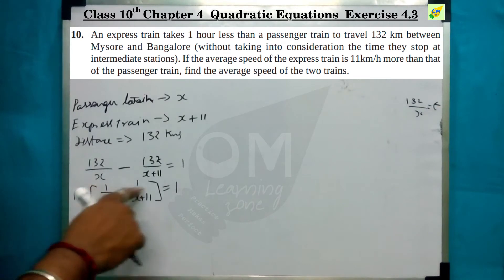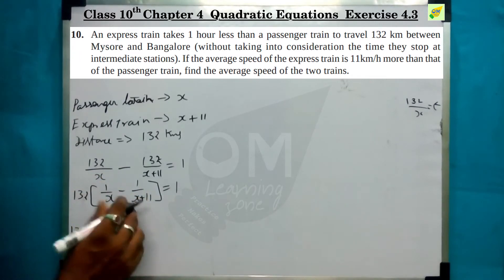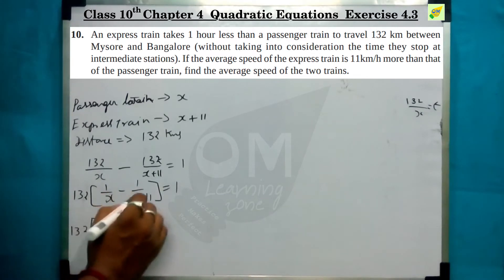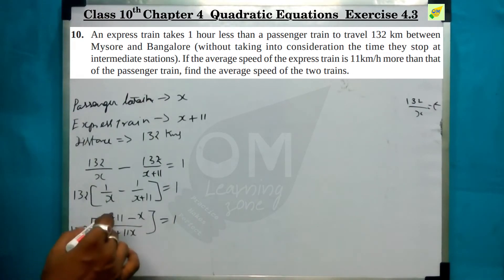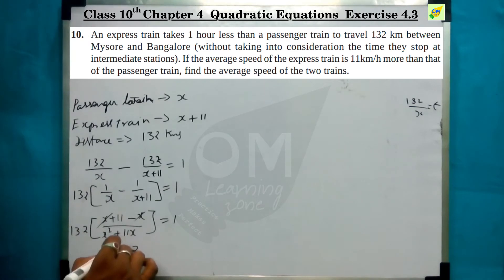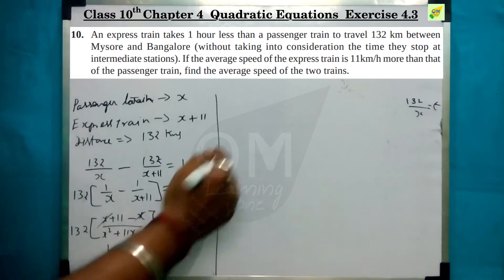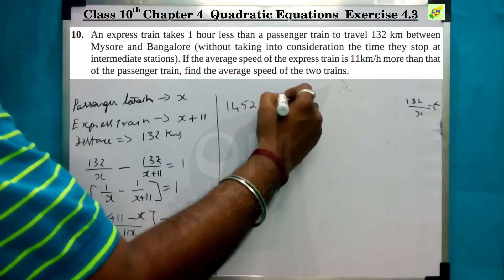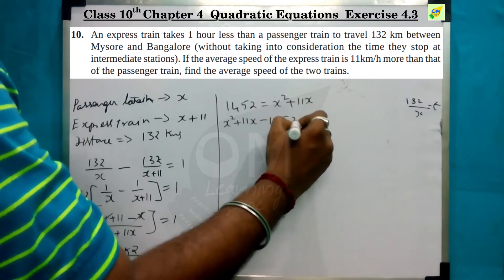We cross-multiply. 132 into (x + 11) minus 132 into x, divided by x(x + 11) equals 1. The x and minus x cancel, leaving 132 times 11, which is 1452, divided by x squared plus 11x, equal to 1.